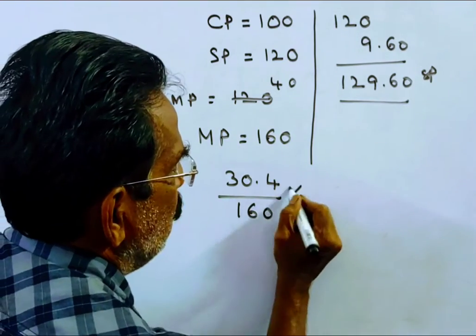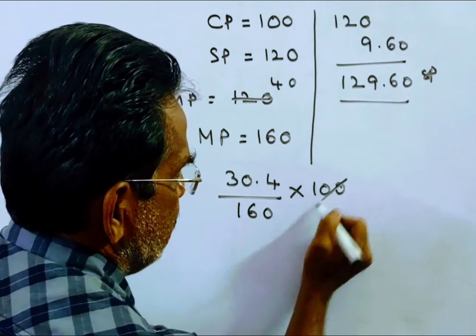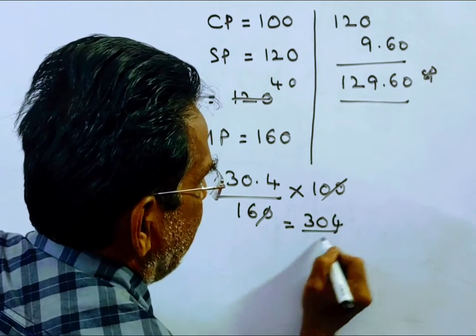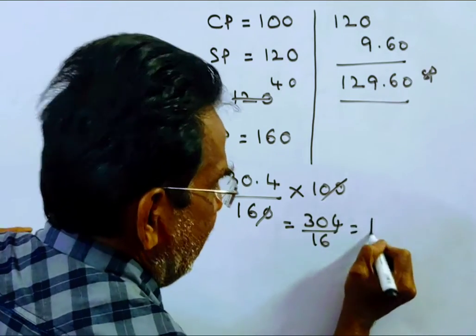This equals 304 divided by 16. 16 once is 16, 14 remains. 144 divided by 16 is 9.